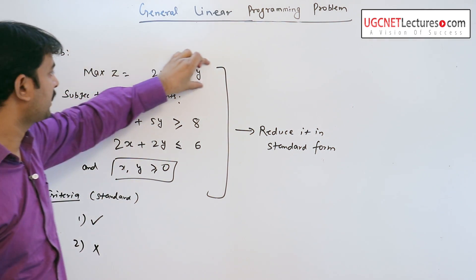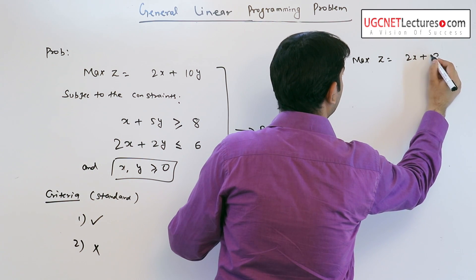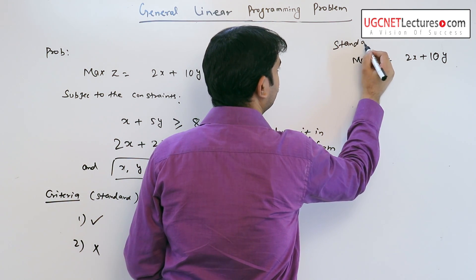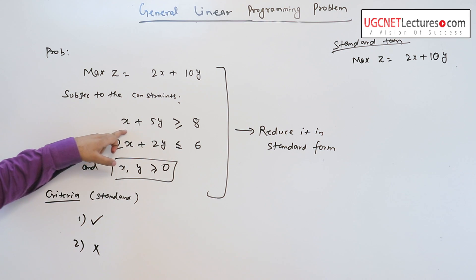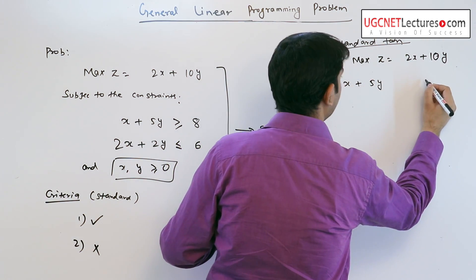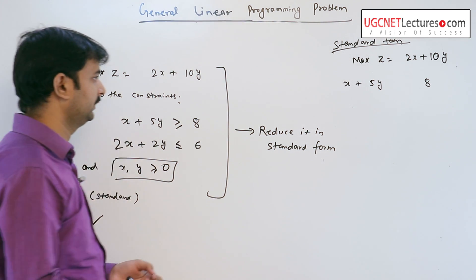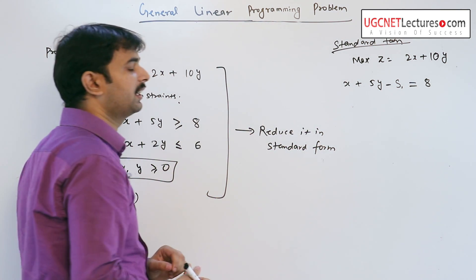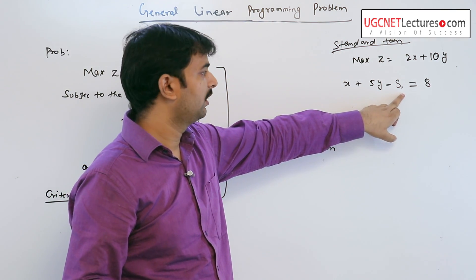The objective function remains the same in standard form since the problem is of maximization type. Now, looking at the first constraint: x plus 5y is greater than or equal to 8. If we introduce S1 in negative form on the left-hand side, we can write it as an equality: x plus 5y minus S1 equals 8.